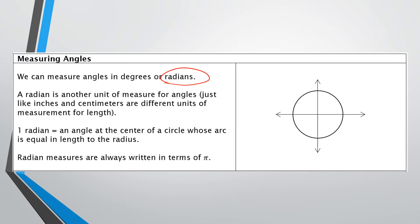They're just different units of measurement, but we have to get used to what a radian means to understand how we're going to use it. What a radian actually is: if I take the radius of my circle — here's my radius, highlighted in red — whatever that length is, imagine if I curved it onto the top of the circle so that the curved arc and the straight radius were the same length. So if this straight length is r, then this arc would also be length r.